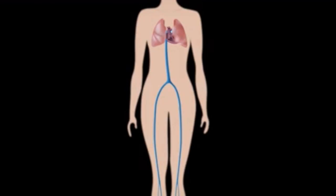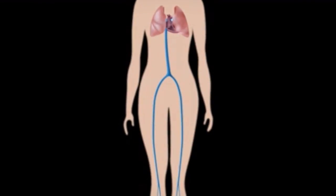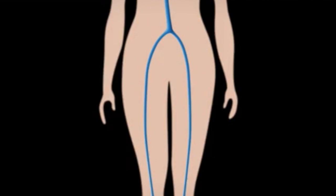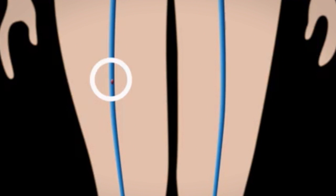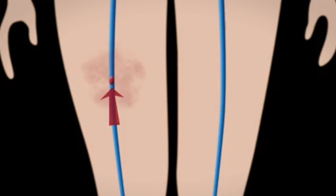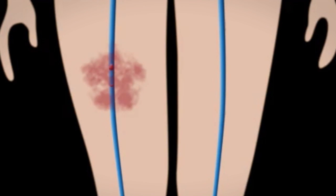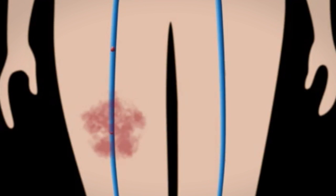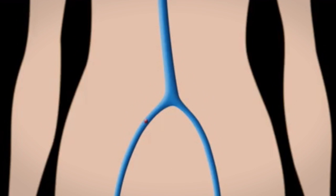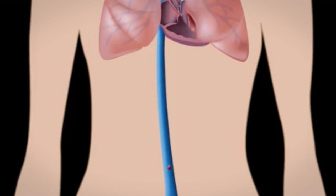A portion of a formed blood clot can break off and travel into the circulation. The traveling clot may become lodged in a blood vessel in the brain or in the artery of the heart. If this happens, the clot may block the blood supply to a portion of the brain or heart, which may eventually lead to a life-threatening condition such as a stroke or heart attack.